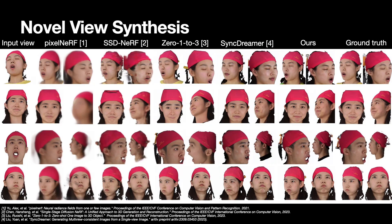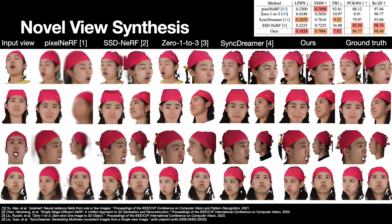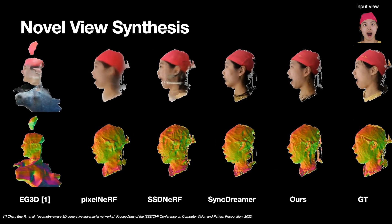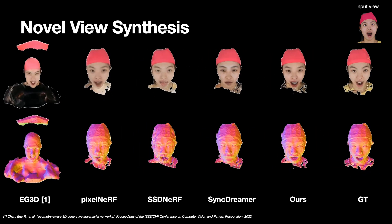We evaluate our method on the task of novel view synthesis of faces. Given a single portrait image, our method produces more plausible and realistic novel views while maintaining better multi-view consistency compared to state-of-the-art methods. Quantitative comparison on the Facescape dataset demonstrates that our method produces the best perceptual metrics. We show the meshes of our method and the baselines reconstructed with NeuS2 — please pay attention to the subject's facial expression and side-view renderings.